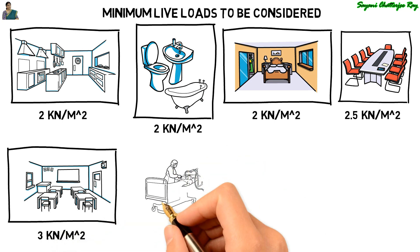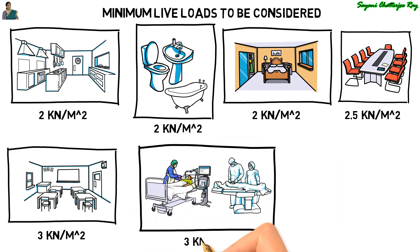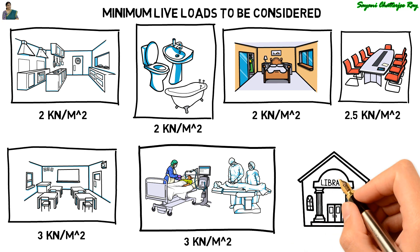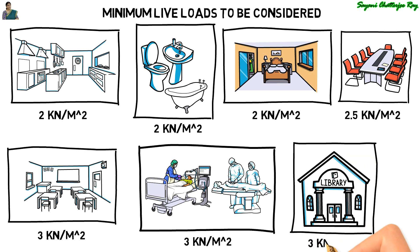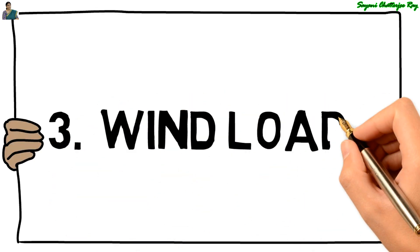For x-ray rooms and operation theater in a hospital, the UDL load is taken as 3 kN per meter square. For reading rooms in libraries with separate storage, the UDL load is 3 kN per meter square. The next very important type of load is the wind load.